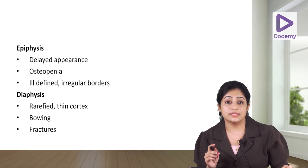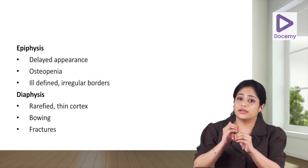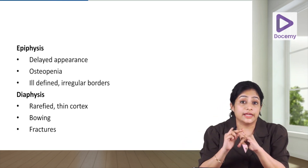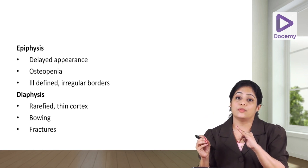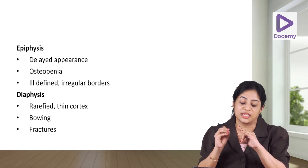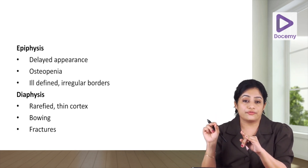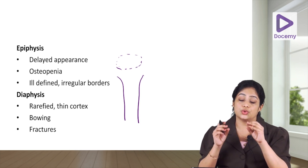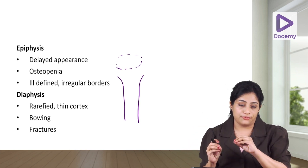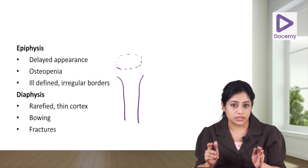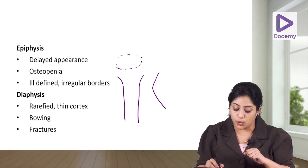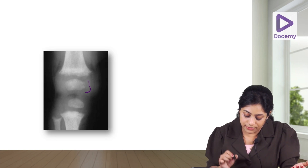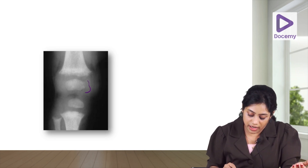The epiphysis will be delayed in appearance because it is not ossified or mineralized and thus not visible on X-ray. When it does appear, it will be of low density due to osteopenia, with irregular ill-defined borders. The shaft also shows decreased bone density — it is rarefied — and the cortex becomes thin and coarse. Weight bearing on the weakened shaft can result in bowing of the bones and may even lead to fractures.